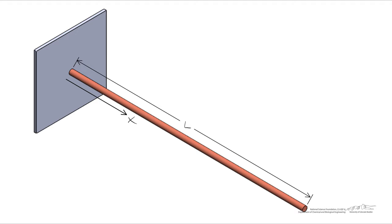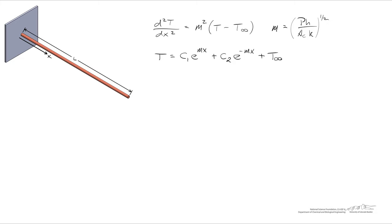What we looked at was conduction down the axis of the extended surface, and then we looked at the fact that convective heat transfer occurred in an orthogonal direction away from the extended surface into the surroundings. By performing an energy balance on a differential slice of our extended surface we arrived